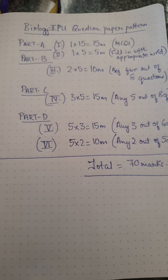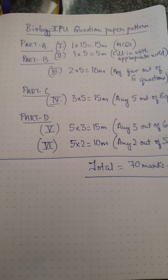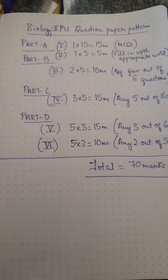Part B, the third Roman numeral: we have ten marks from this. These are two-mark questions—answer any five out of eight questions.